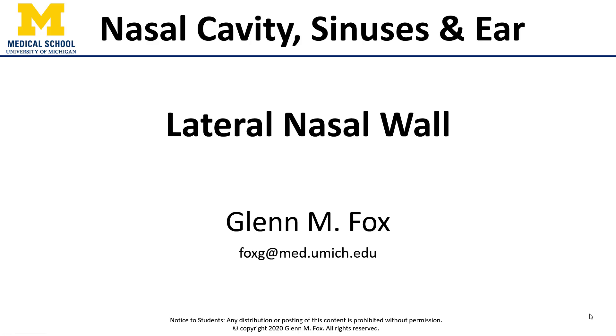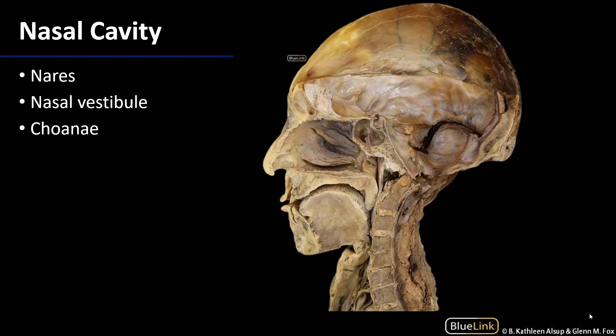Let's talk about the lateral wall of the nasal cavity. The nasal cavity is an irregular space bounded by the hard and soft palate as the floor, the frontal, ethmoidal, and sphenoidal bones as the roof, which is separated from the nasopharynx by the choana, and communicates with the external environment through the nares, which feed into the nasal vestibule.